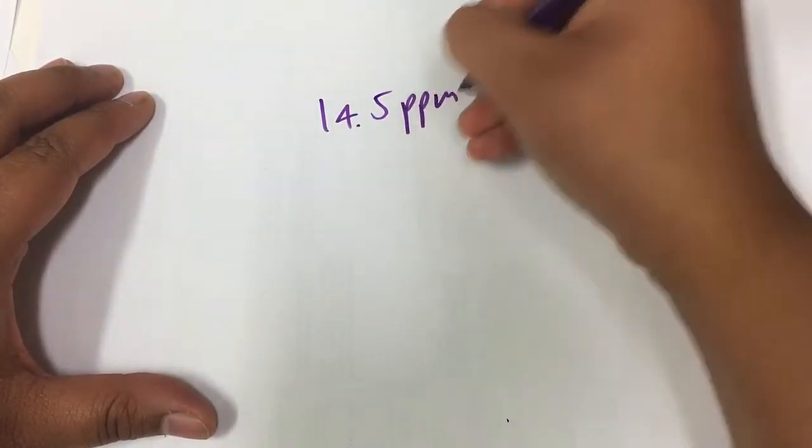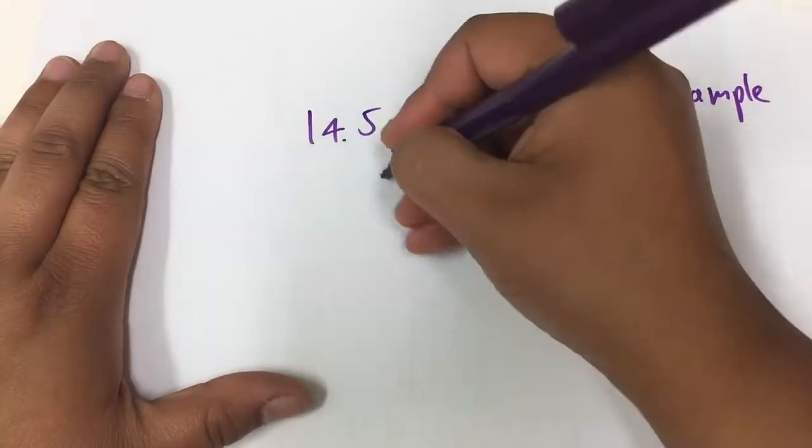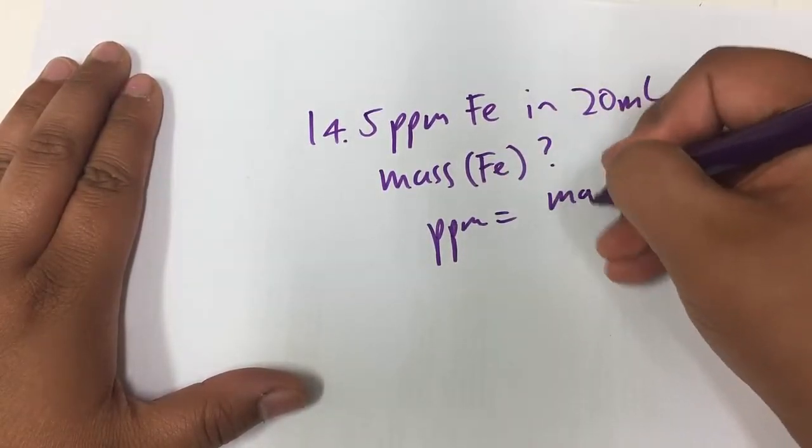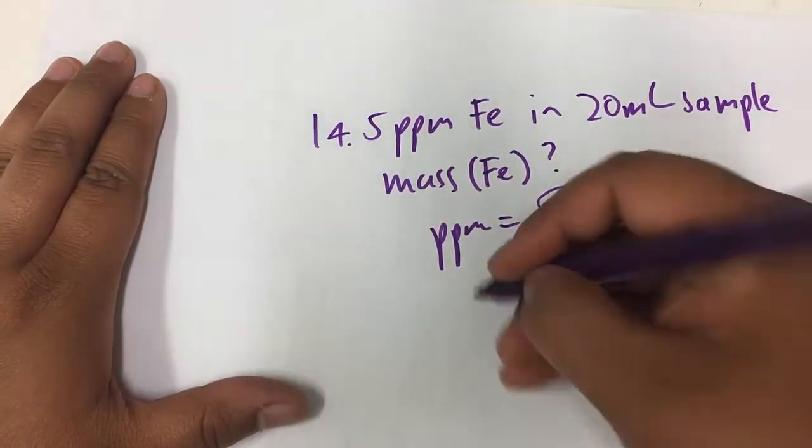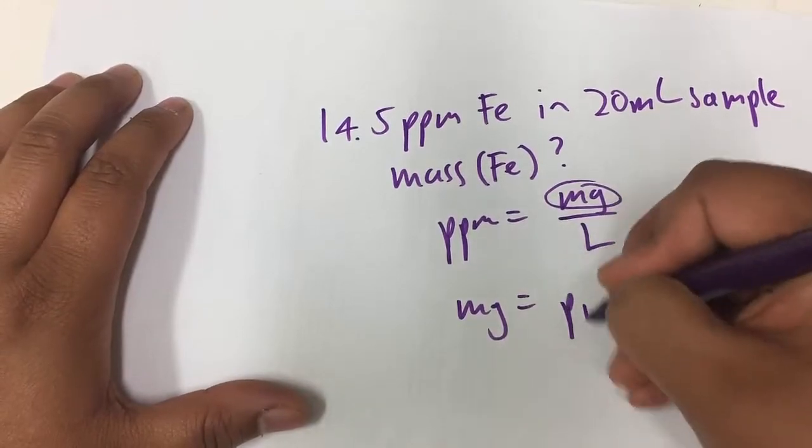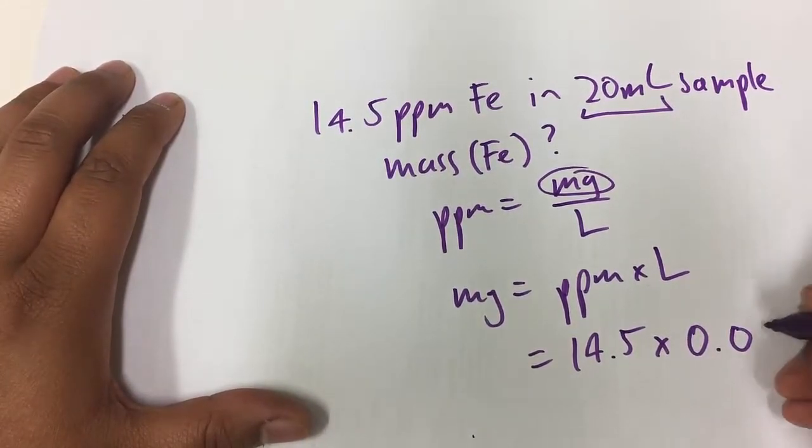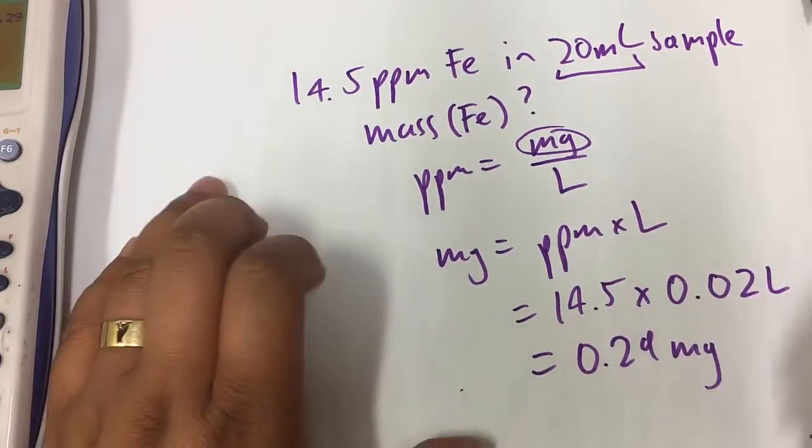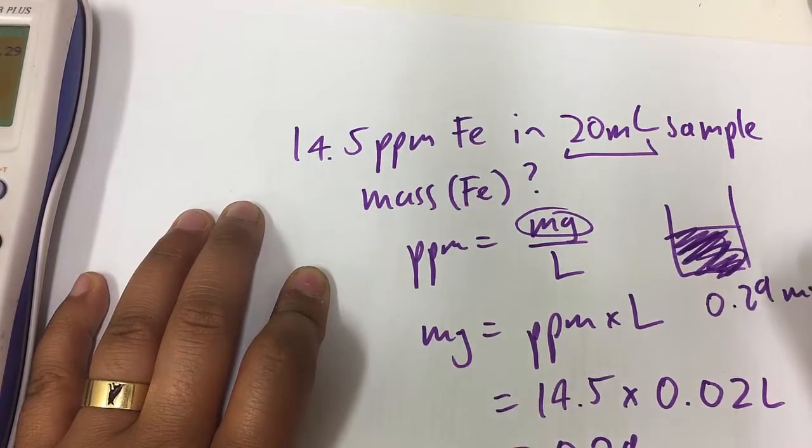And so we said it was 14.5 ppm. So for 14.5 ppm of iron in the 20ml sample, what we can do is we can work out the mass of iron in that sample. And we can do that because ppm, the units of ppm, is milligrams per liter. And we know what the ppm is. We know how much volume we had in our sample. And we want to find out that milligrams. So if we rearrange this, we can get that milligrams is going to be equal to ppm times by the number of liters. ppm was 14.5, and our liters, if we change that 20ml into liters, we get 0.02 liters. So that gives me 0.29 milligrams.